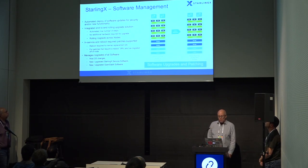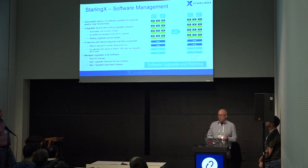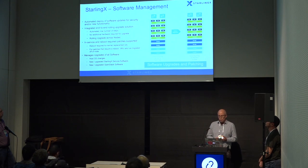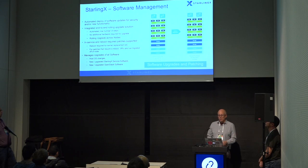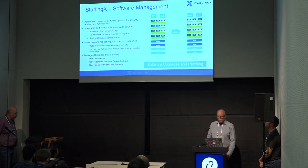Software management allows deploying software updates to fix bugs, security issues, and deliver new functionality. It's an integrated end-to-end rolling upgrade solution supporting multiple types of patching — in-service and out-of-service — for patches that require a node to be taken down, such as replacing a kernel. The orchestration framework automatically migrates VM workloads off that node and does a rolling update through the cluster. Upgrades manage the full stack, not just an OpenStack upgrade.